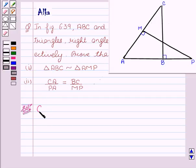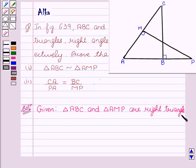We are given triangle ABC and triangle AMP are right triangles. And we are also given that triangle ABC and AMP are right angled at B and M. So we can write angle M equal to angle B equal to 90 degrees.